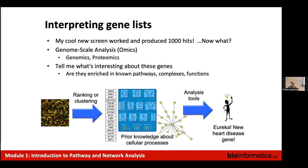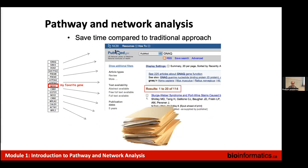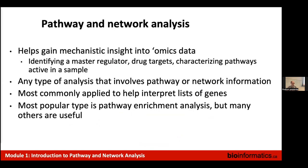One way that people have found extremely useful to answer the question 'what's interesting about these genes' is to find out if they're related to known biology, known pathways, complexes, and functions. We'd like to automate that, because if you had a thousand genes and wanted to find out what pathways they were involved in just by looking at the literature, it would take a long time. Pathway and network analysis is the area of computational biology or bioinformatics that tries to automate this.